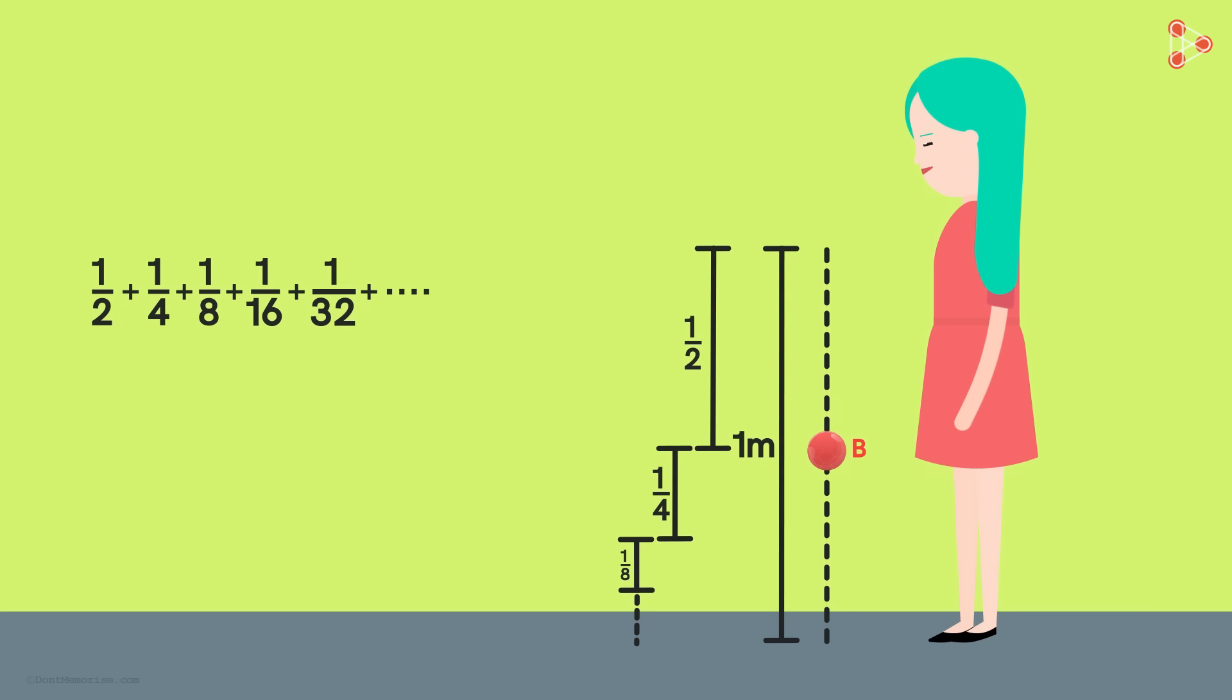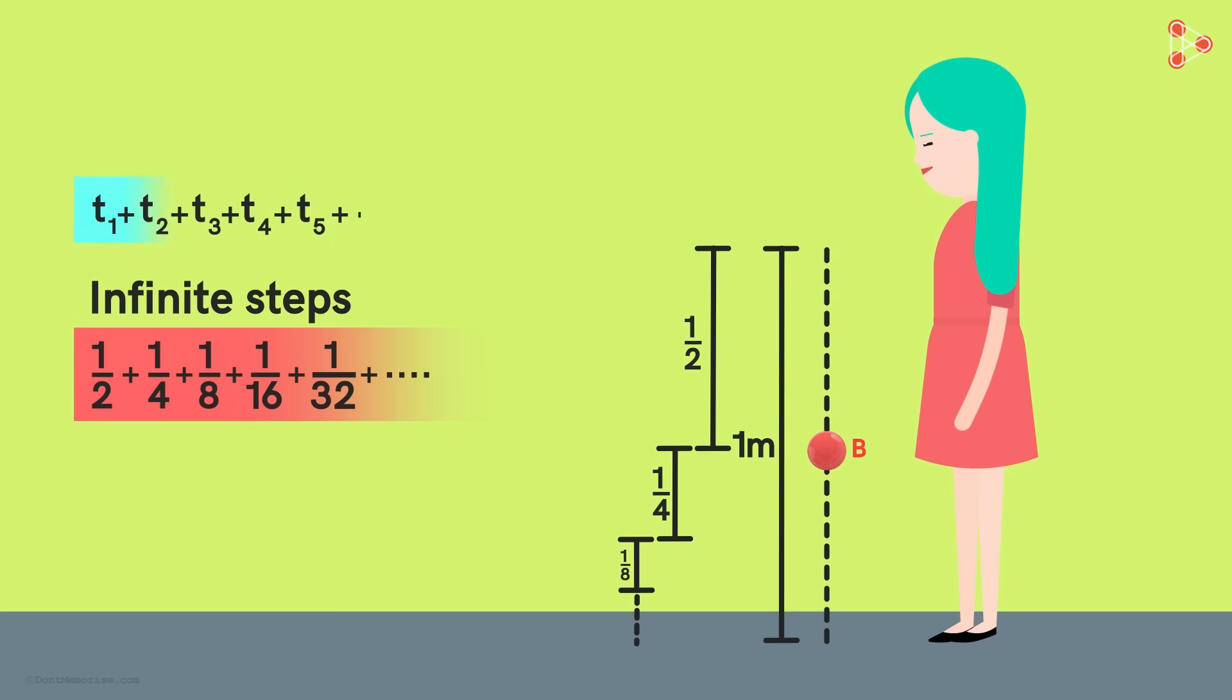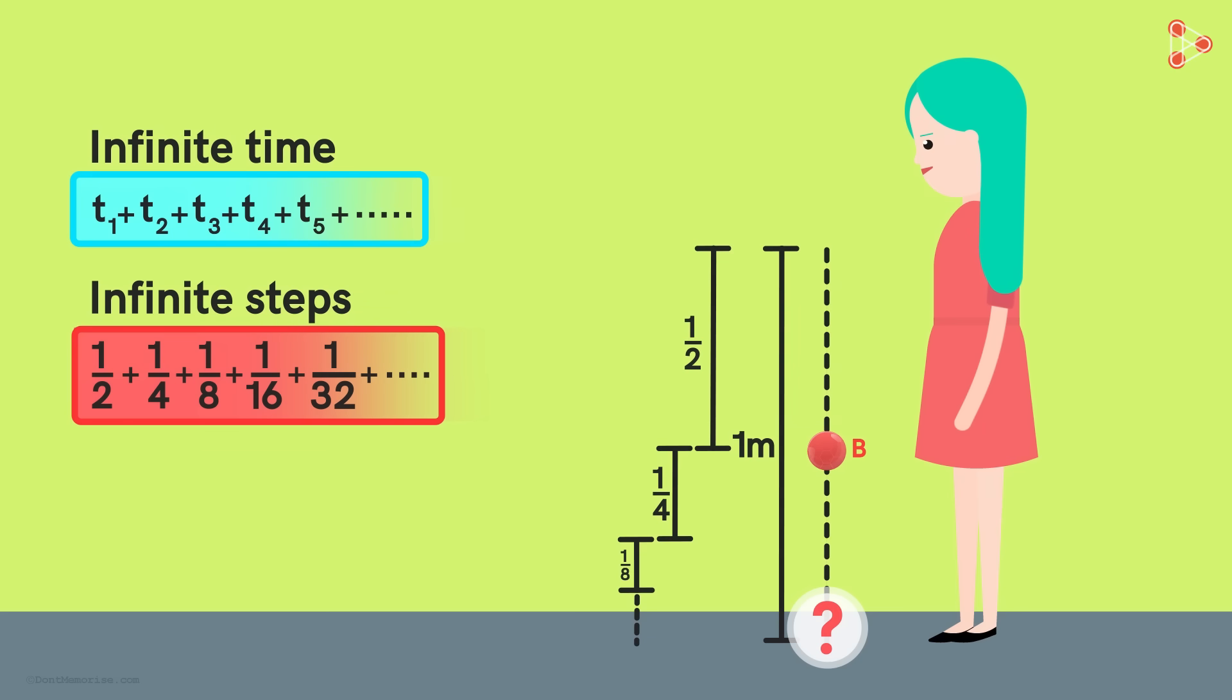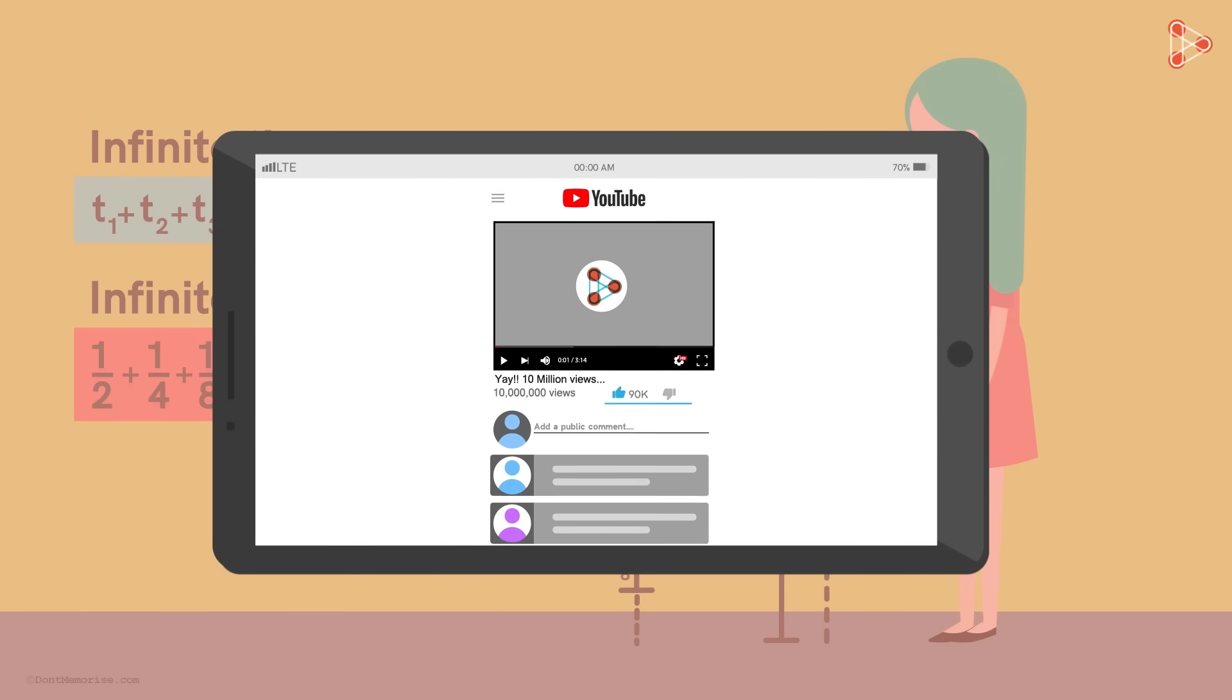It means the number of steps the ball has to cover to reach the floor does not end. That is, there are infinite number of steps the ball has to perform. And to perform these steps, the ball takes an infinite amount of time. So according to this logic, Nora thinks the ball requires an infinite amount of time to reach the floor. Therefore, the ball should never reach the floor, right? Do you also think the same? Do you think Nora went wrong somewhere? Share your thoughts in the comments section!